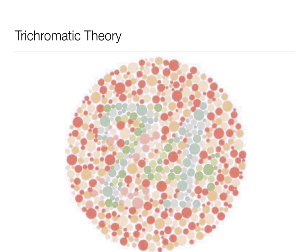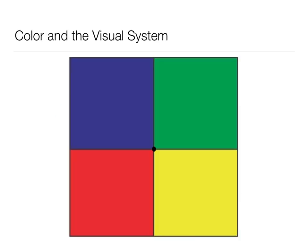Our next theory has a demonstration first. I want you to foveate — focus on the black dot in the middle of those four colored squares — and stare at it for about 30 seconds. The longer you do it, the better it'll work. Go ahead and pause the video and stare at that for about 30 seconds.